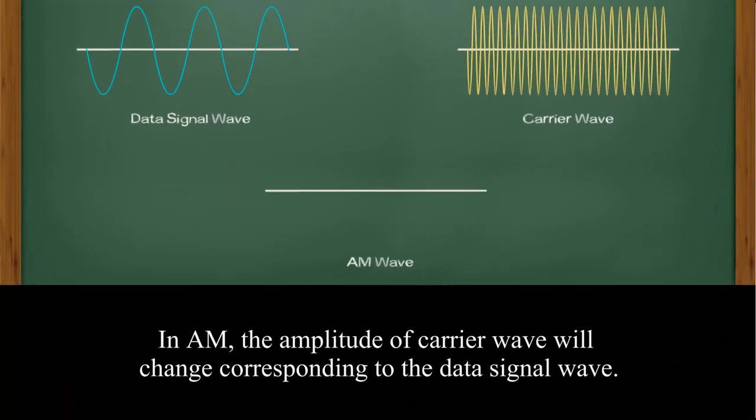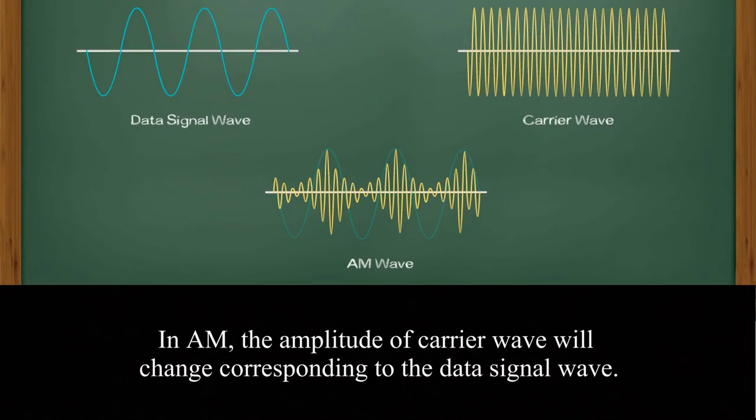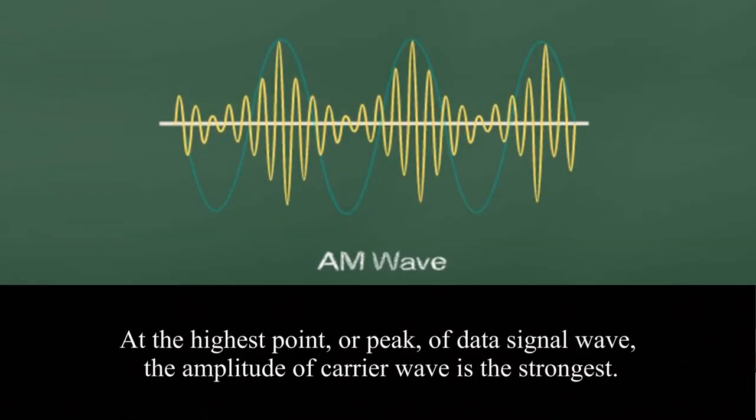In AM, the amplitude of a carrier wave will change corresponding to the data signal wave. At the highest point or peak of the data signal wave, the amplitude of a carrier wave is the strongest.